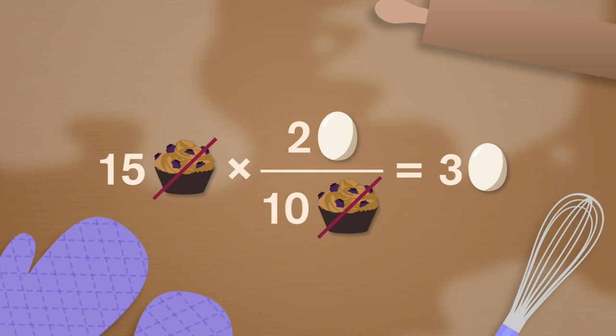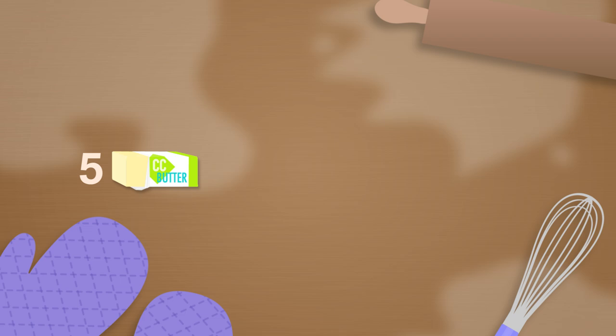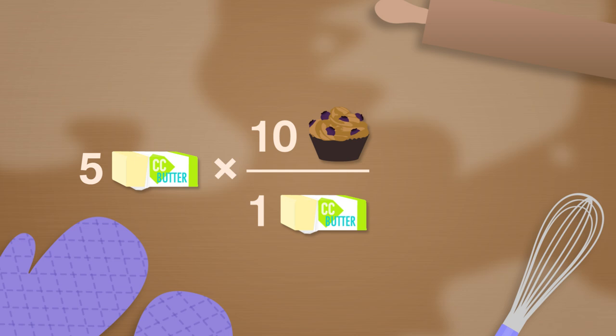What about if we had 5 sticks of butter? Again, it's all about maintaining the ingredient ratio from the original reaction, 1 stick of butter to 10 muffins. So we can multiply 5 sticks by 10 muffins over 1 stick. Our sticks of butter cancel out, and we find out we can make 50 muffins.